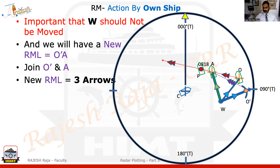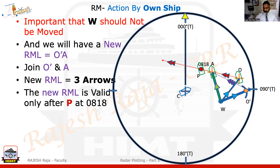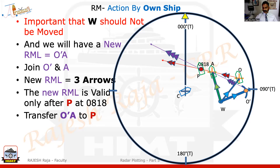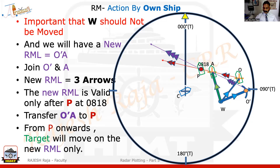I'm going to join O dash A — this is the new RML because of my course change. I'm going to mark it with three arrows. Please keep on increasing the number of arrows only on the RML, because that is the most important data which will come in your ARPA. I've got a new RML with three arrows. This new RML is valid only from P onwards — that is, after 0818. So I'm going to transfer this new RML with my roller scale. Mark this also with triple arrows. All measurements of this new RML should be measured from O dash A, which also has three arrows.